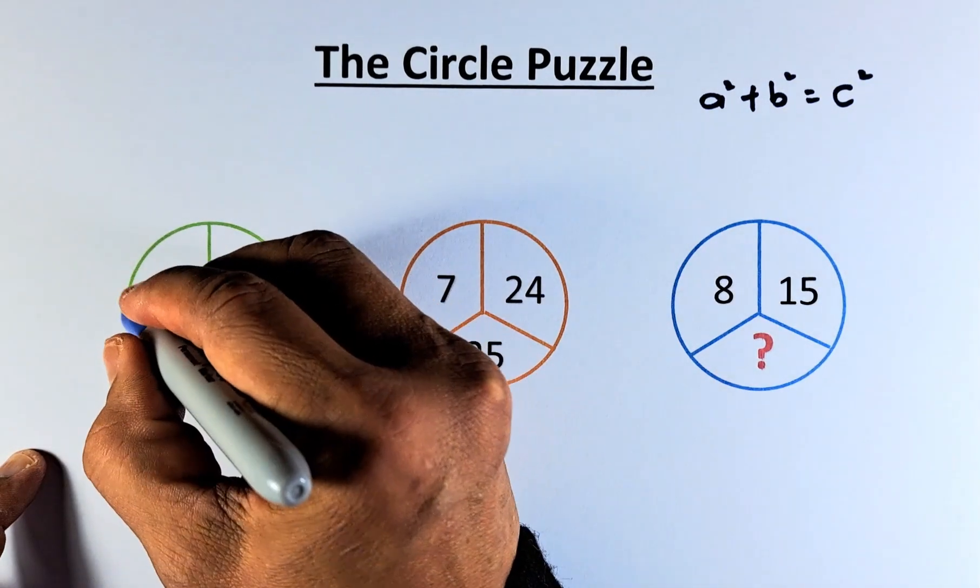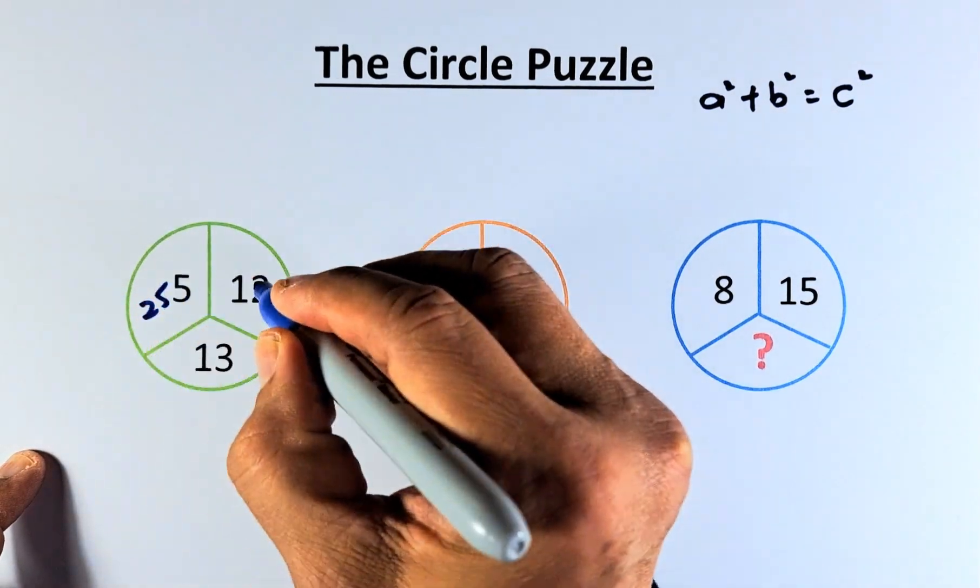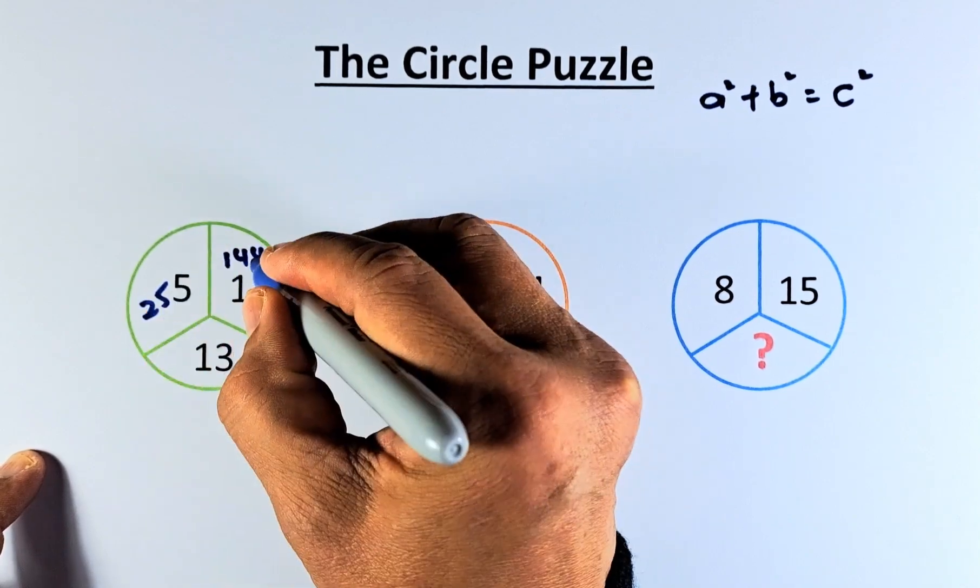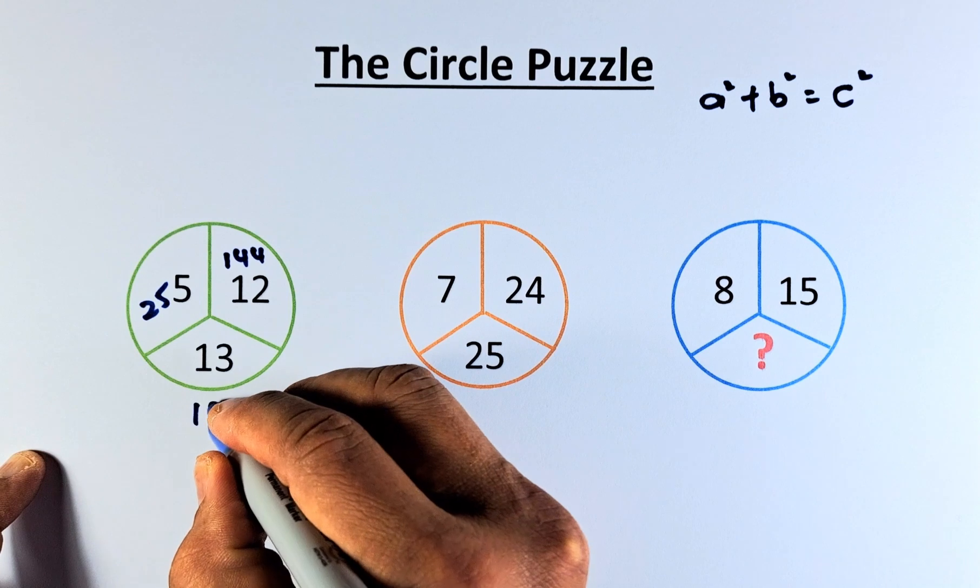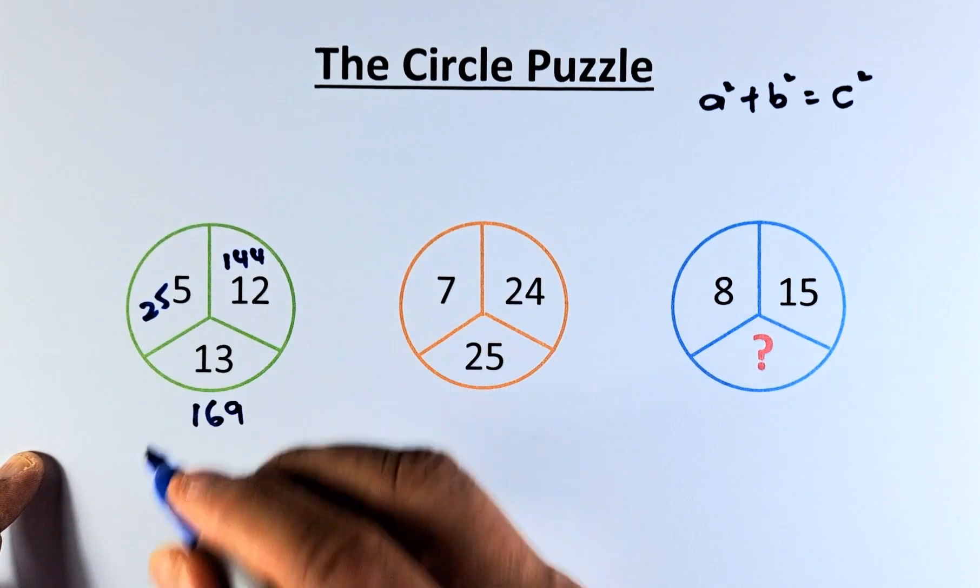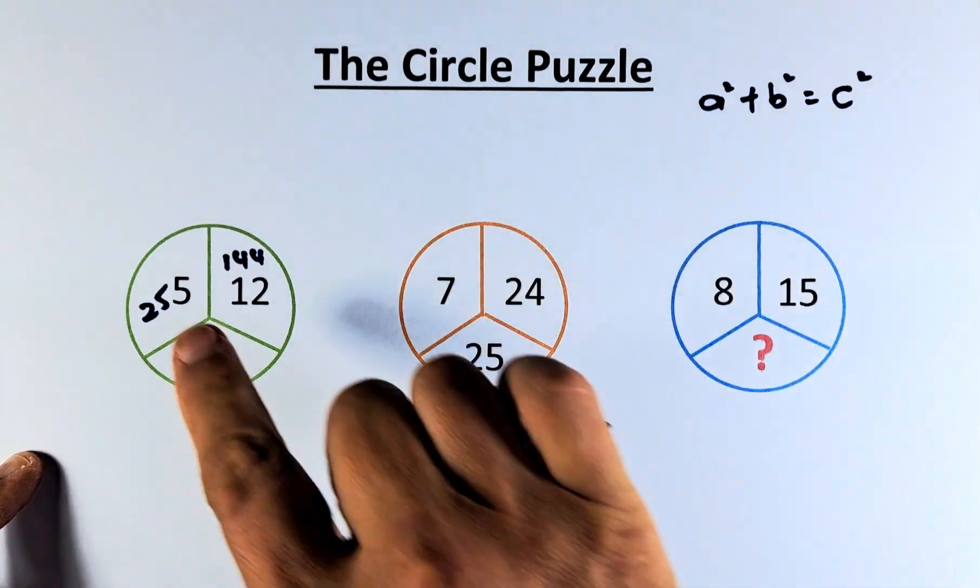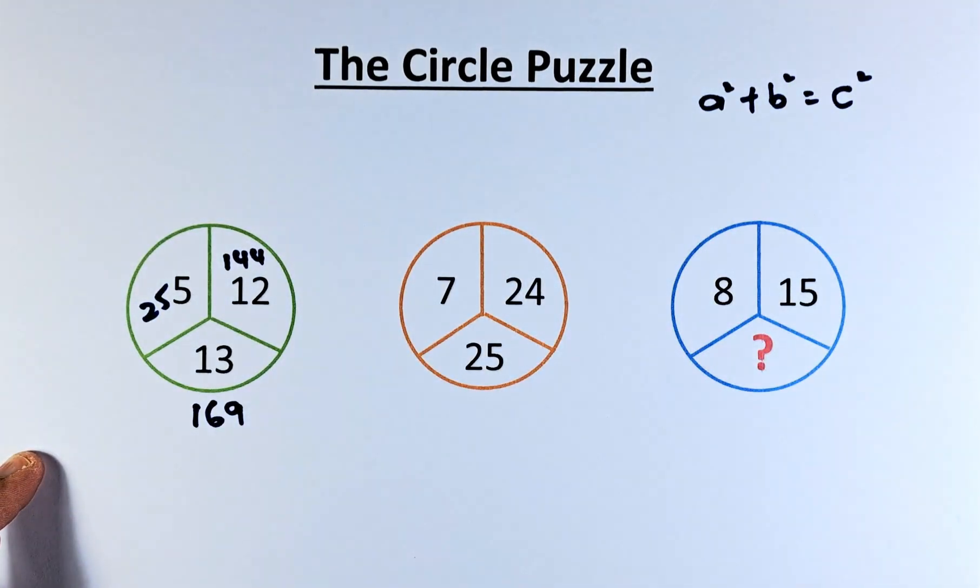In the first case, 5² is 25, 12² is 144, and when you add 25 + 144, it's 169, which is the square of 13. So 5² + 12² = 13².